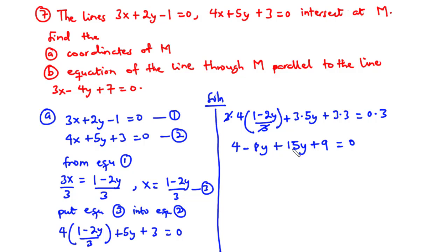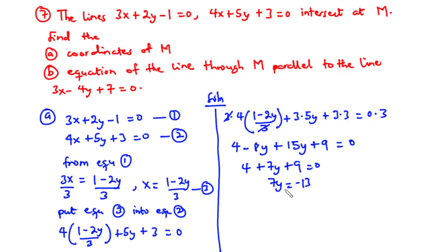Combining like terms: negative 8y plus 15y gives 7y, and 4 plus 9 gives 13, so we have 7y plus 13 equals 0. Transposing gives 7y equals negative 13, and dividing by 7 gives y equals negative 13 over 7.